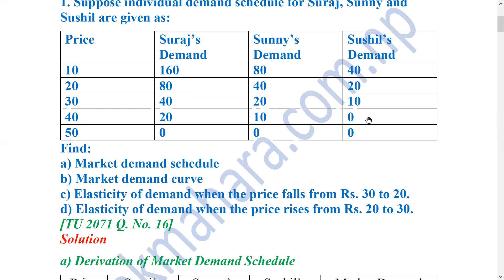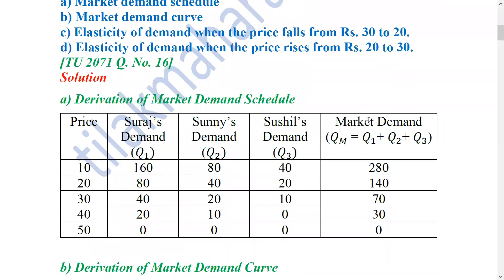We will have 3 individual demand schedules for the market. The market demand schedule is based on market demand. To find market demand, we have to add individual demands. At a particular price, we have to sum all individual demand quantities.